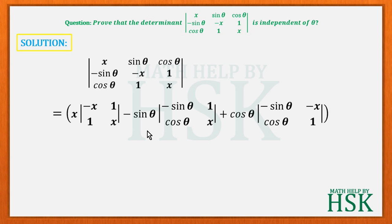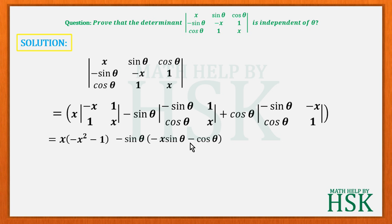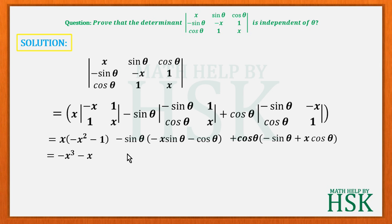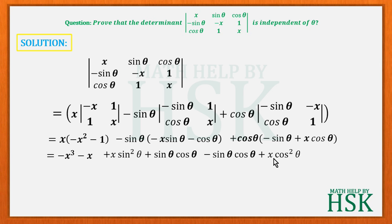Now simplifying all three 2×2 determinants, we get: x times (x² - 1), minus sinθ times (-x sinθ - cosθ), plus cosθ times (-sinθ + x cosθ). Opening all the brackets, this gives us -x³ - x, plus x sin²θ plus sinθ cosθ, minus sinθ cosθ, plus x cos²θ.